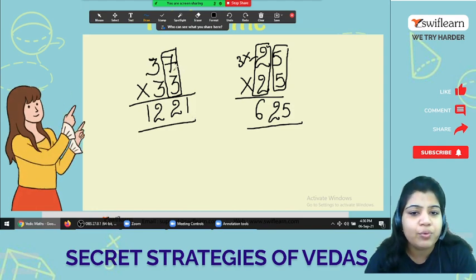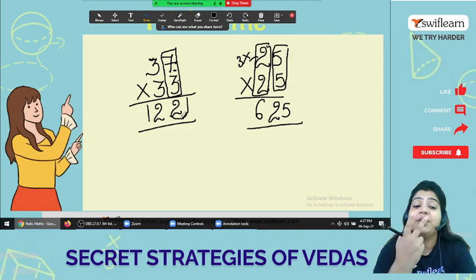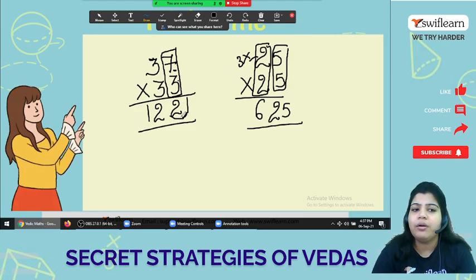But remember one thing. Here we have two digits, 1, 2. So the last digit answer come in 2 digit. If you have 4, so the answer comes in 4.